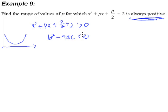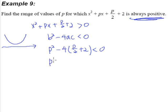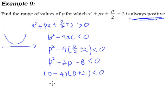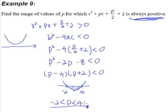The discriminant b squared minus 4ac will have to be negative because there are no real roots. So, b squared is p squared, minus 4 times a (which is 1) times c (which is p over 2 plus 2), and this must be less than zero. Working this out, we get p squared minus 2p minus 8 less than zero. Factorizing, we get (p minus 2)(p plus 2) less than zero. Sketching the curve with roots at negative 2 and positive 4, we want the parts below the x-axis. So our answer is negative 2 less than p less than positive 4.